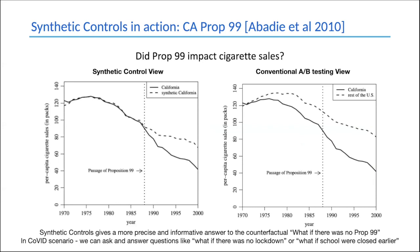The left graph shows the impact of Prop 99 using a synthetic control approach. The vertical line is the date Prop 99 was passed. The solid line is per capita smoking in California. The dashed line, trained on data to the left of the vertical line, is synthetic California; to the right, it's generated purely from other states. Clearly, there is a significant impact — smoking fell sharper in real California versus synthetic California. The conventional A-B testing view on the right also shows impact, but it's not as clearly visible. Synthetic controls give a more precise, informative answer to the counterfactual: what if there was no Prop 99?